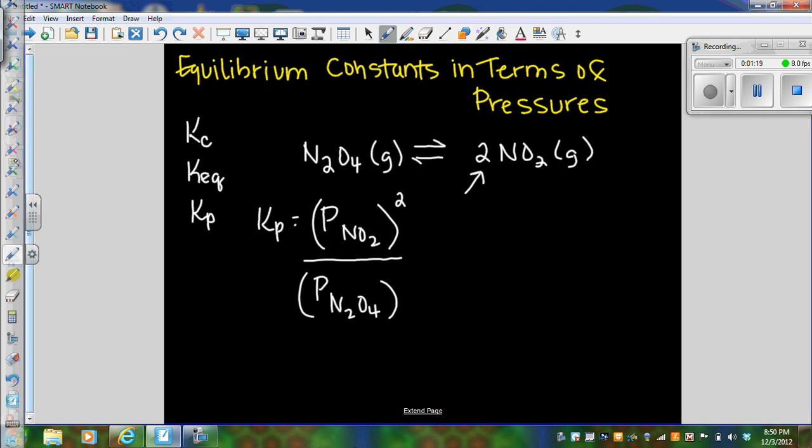Now let's imagine that we had this in a container and my calculator has died, so I'm going to make up numbers that I can do easy math with. So let's say that this is at one atmosphere at equilibrium, and let's say that this is four atmospheres at equilibrium.